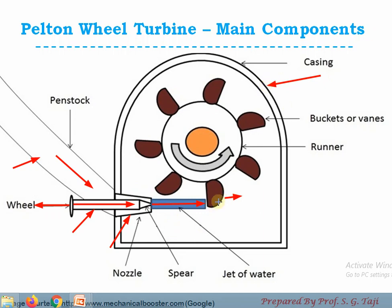The next component is the casing. Whenever the jet of water strikes on the blade, some splashes of water come out due to the striking, and those splashes will be prevented by the casing and safely discharged to the tail race. The casing does not serve any hydraulic function in the case of Pelton wheel turbine because the Pelton wheel turbine works totally under kinetic energy, and whatever pressure is available at inlet and outlet of the Pelton wheel turbine is atmospheric pressure.